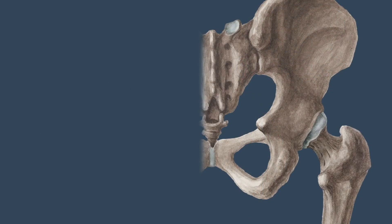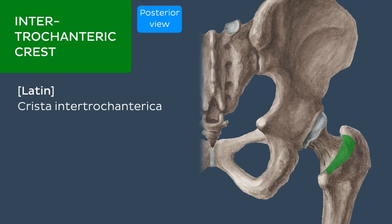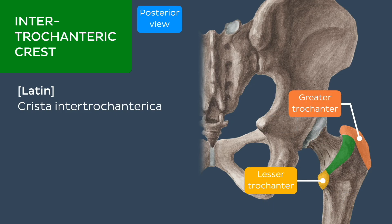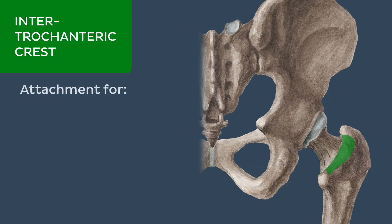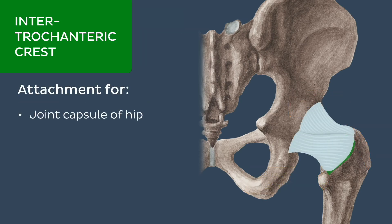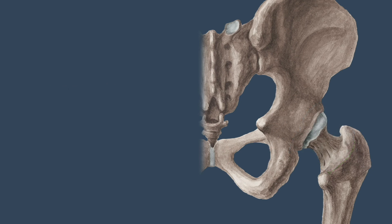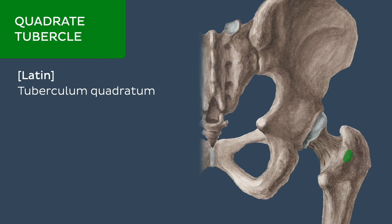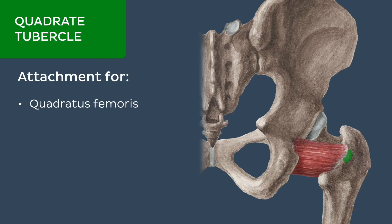Not to be confused with the intertrochanteric line, the intertrochanteric crest is a bony elevation on the posterior aspect of the proximal end which marks the transition between the neck and the body of the femur. It extends from the greater trochanter superlaterally to the lesser trochanter inframedially, and forms the posterior part of the attachment for the joint capsule of the hip. Approximately halfway across the intertrochanteric crest is a bony protuberance known as the quadrate tubercle, which forms the insertion site of the quadratus femoris muscle.